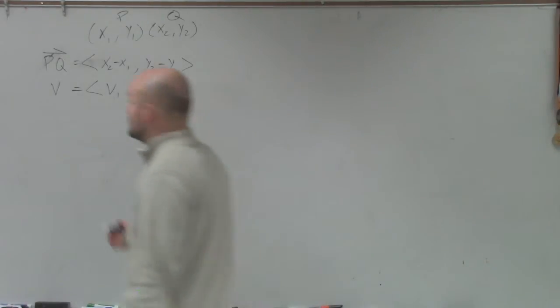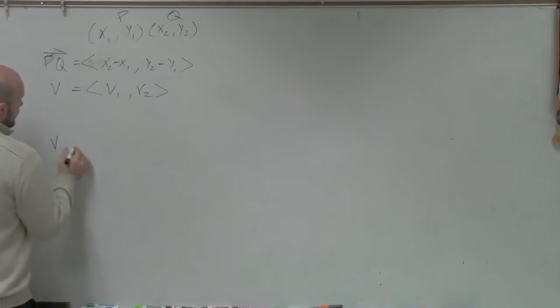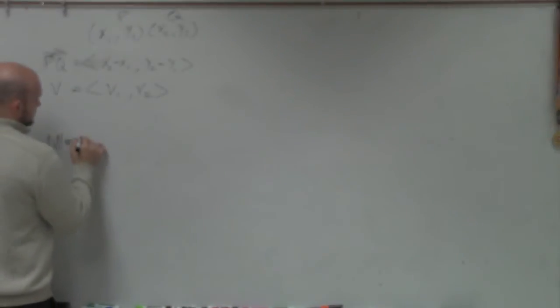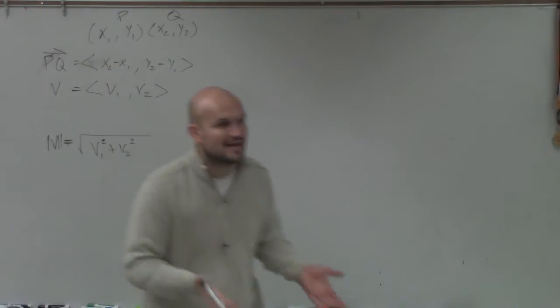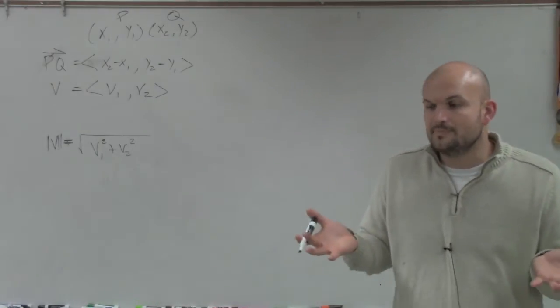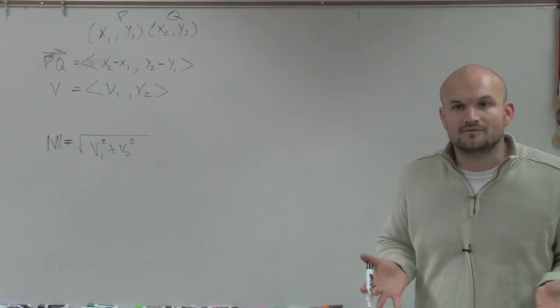And then we learned there's a couple things we could do with the vector. First thing we could do with the vector is find the magnitude of the vector. To find the magnitude of the vector, which was v1 squared plus v2 squared. Remember, magnitude gave you the distance, the length of that vector.